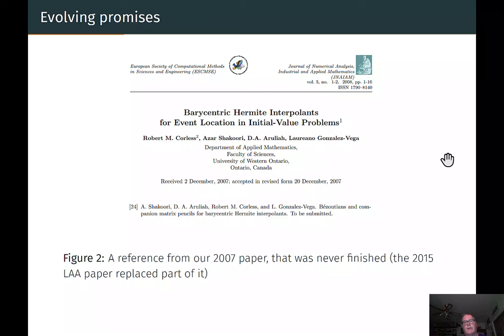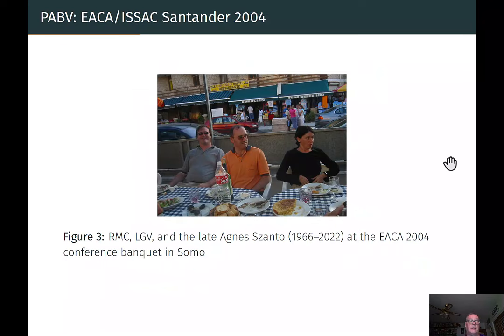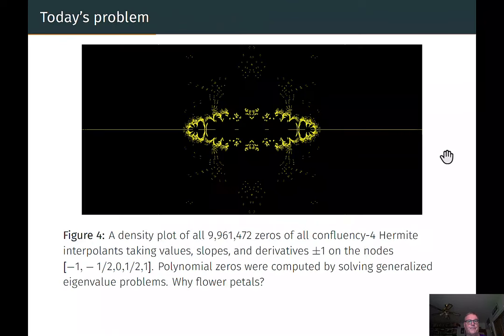Going way back to 2004, I gave an invited talk at IACA 2004 in Santander, which Lalo had organized, and the talk was on polynomial algebra by values. And this paper was never published on its own, but it's up on the Oracle Technical Report website. So here's a screenshot of the Janayan paper of the Barycentric Hermite interpolates for event location. And I've also snippeted out a reference there, reference 24. So here's a photographic proof that we were working together. This is from the IACA banquet in Somal, across the way from Santander. There's myself on your left, and Lalo in the middle, and the late Agnes Santo on your right.